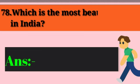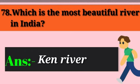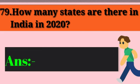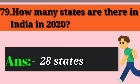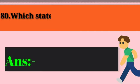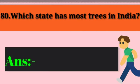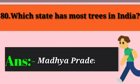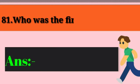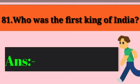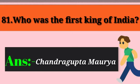Question 78: Which is the most beautiful river in India? Answer: Kane River. Question 79: How many states are there in India in 2020? Answer: 28 states. Question 80: Which state has the most trees in India? Answer: Madhya Pradesh. Question 81: Who was the first king of India? Answer: Chandragupta Maurya.